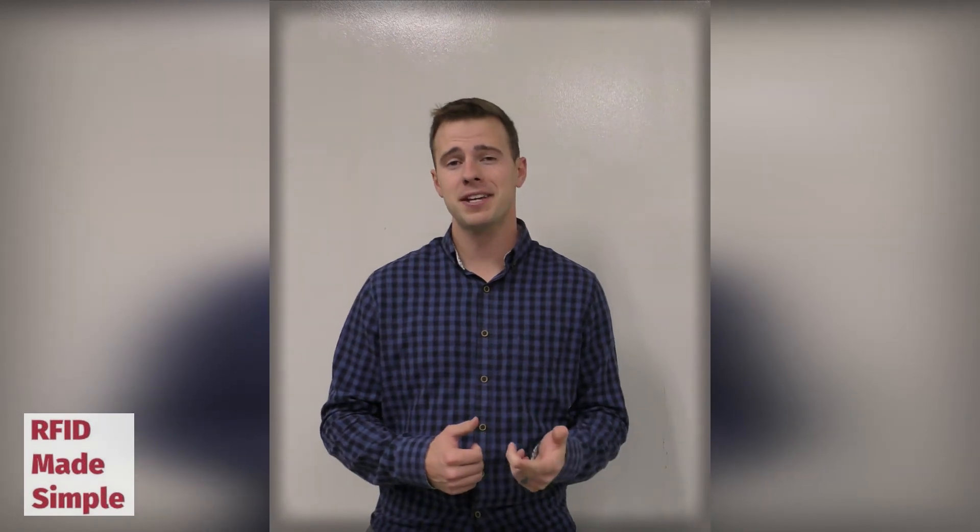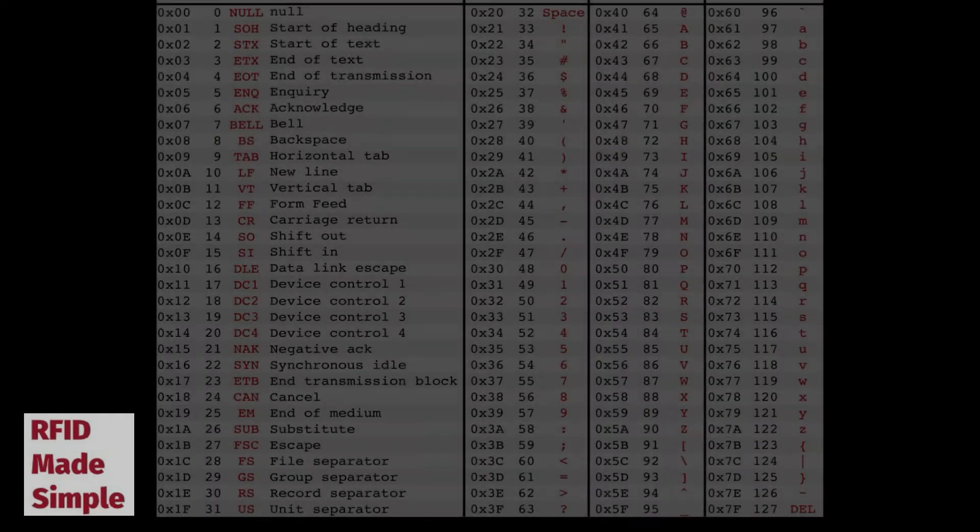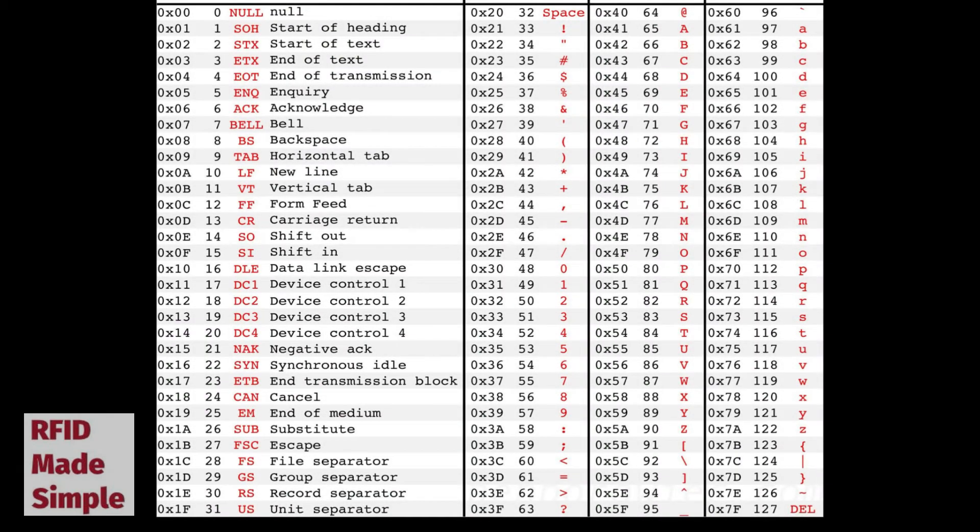Similar to how we convert binary strings to hexadecimal characters, hex characters can also be converted to ASCII characters. Here is a table known as the ASCII conversion table, which allows us to understand how we can program hexadecimal characters as ASCII or other special characters.